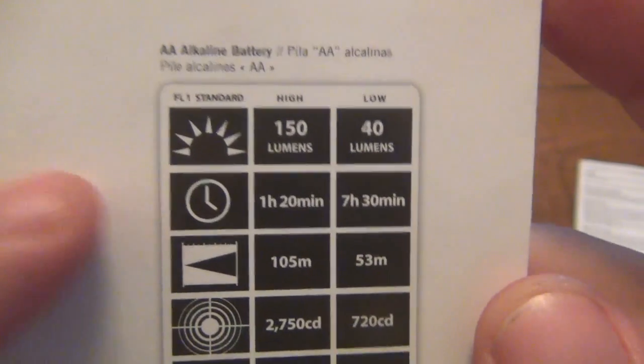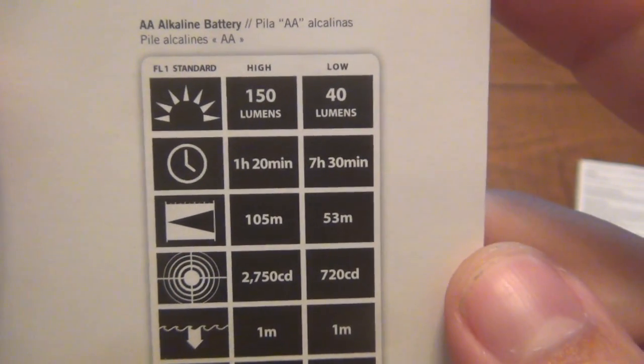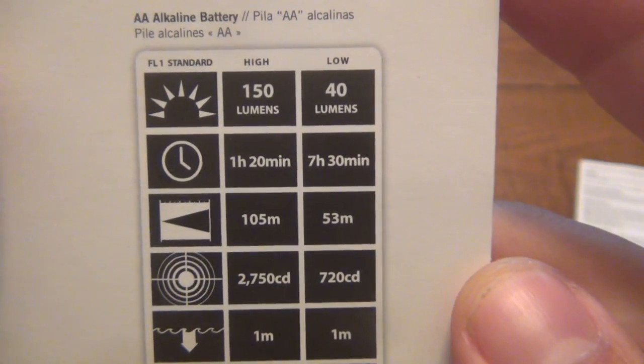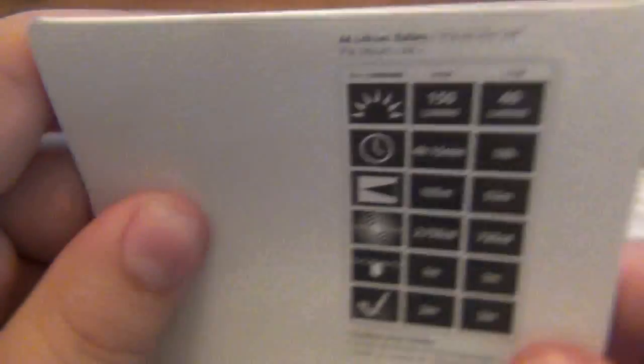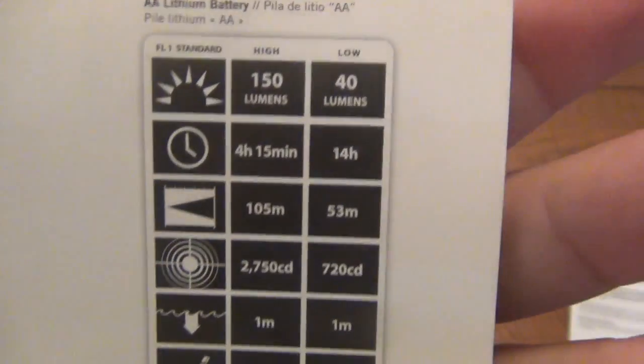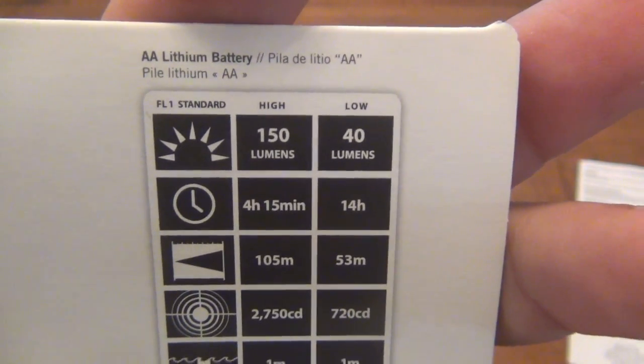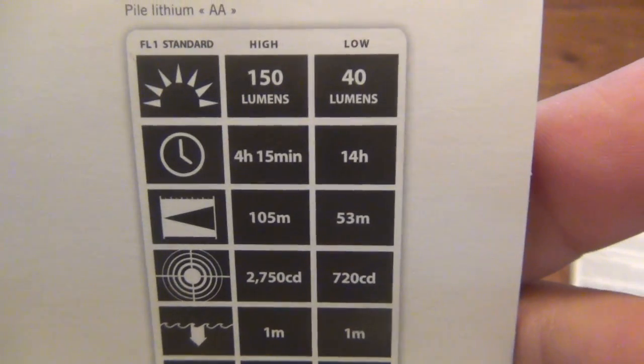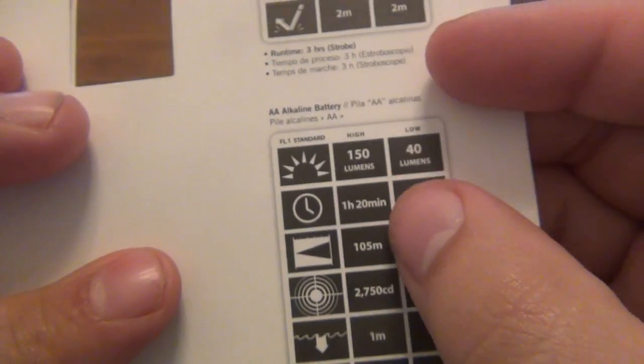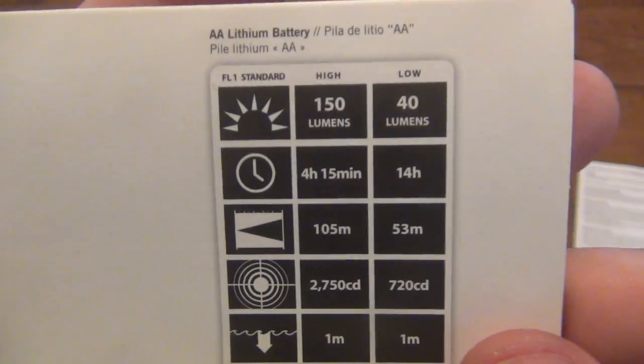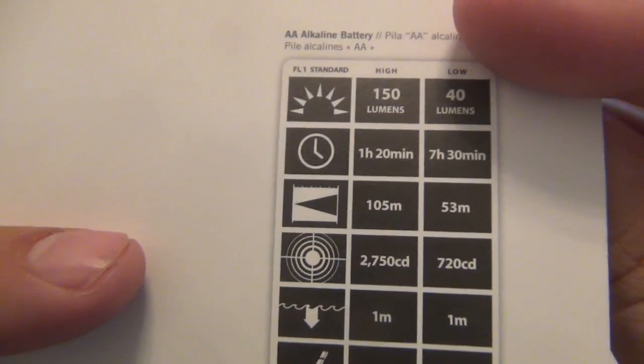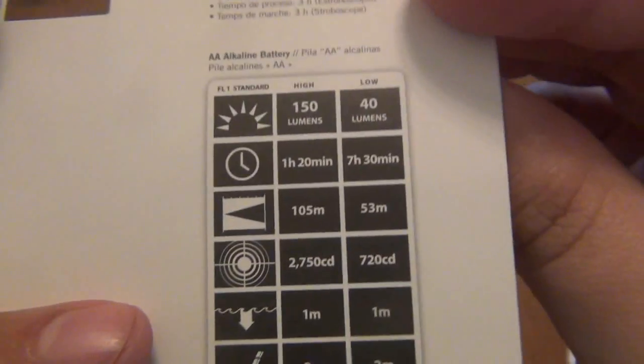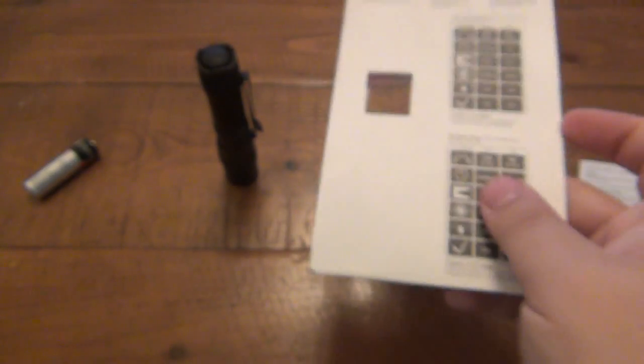Now we go down here. We can see this is our AA alkaline. Our high is 150 lumens for an hour and 20 minutes. And our low is 40 lumens for seven hours and 30 minutes. Now we flip down. You can see they also have our specs for a lithium AA, which are a little bit more expensive. They're also lighter, which is nice. But you can see we get a much longer runtime. Compared to this one here, same 150 for our high, only we're going four hours and 15 minutes as opposed to the hour and 20. And then on low, 40 lumens for 14 hours instead of that seven and a half hours.